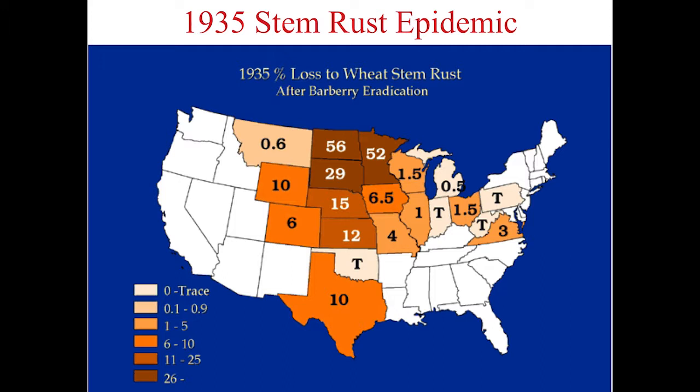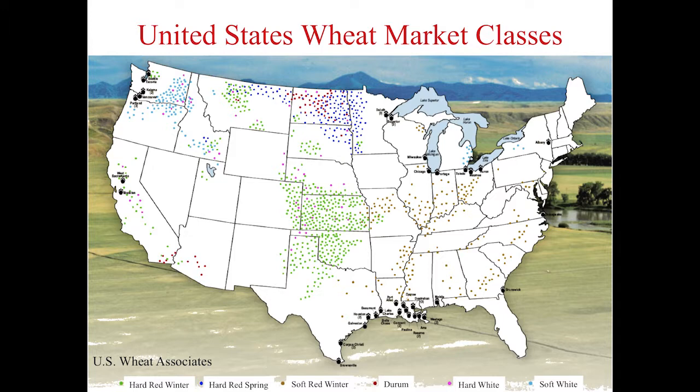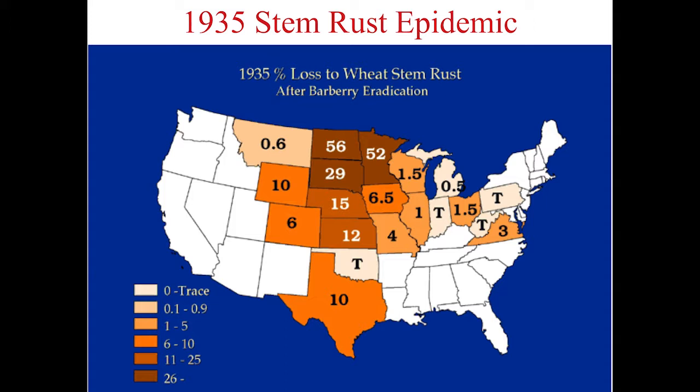We use the reaction across these different resistance genes to classify the race. This is how we get the race name TTKS. A low reaction followed by high, high, high corresponds to a K. I'll be talking about TTKSK and other races, and it all comes back to the reaction on these stem rust resistance genes. One easy takeaway: if there's a T, that's bad — the more T's, the worse the isolate.